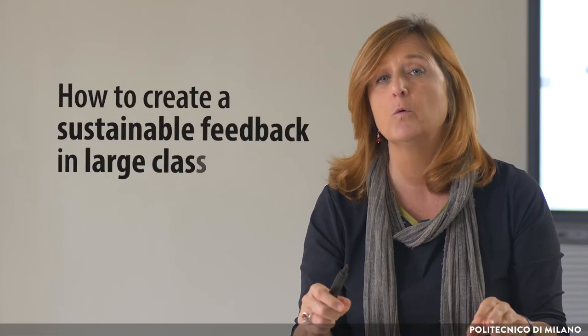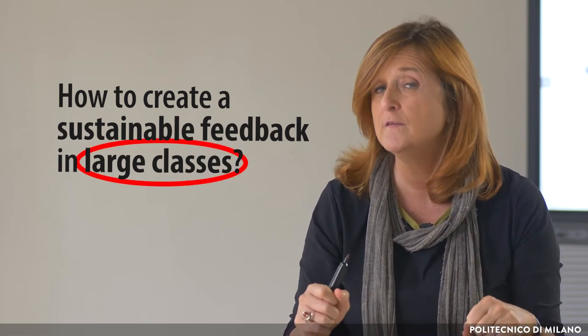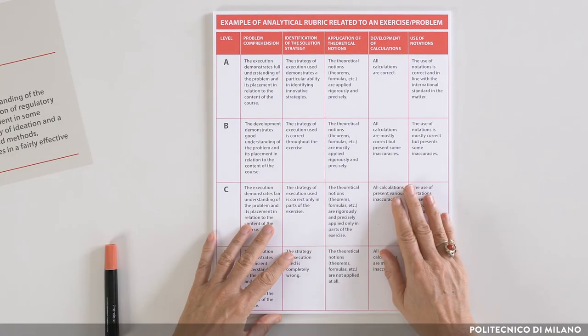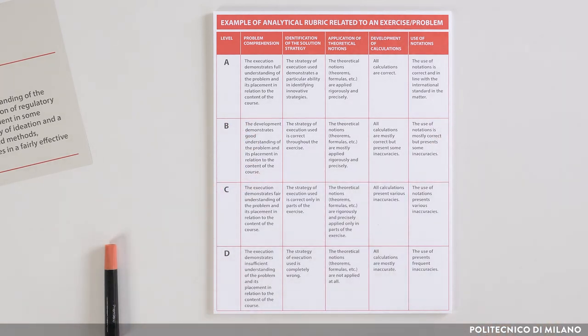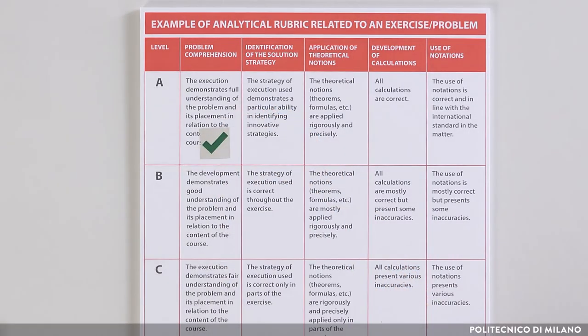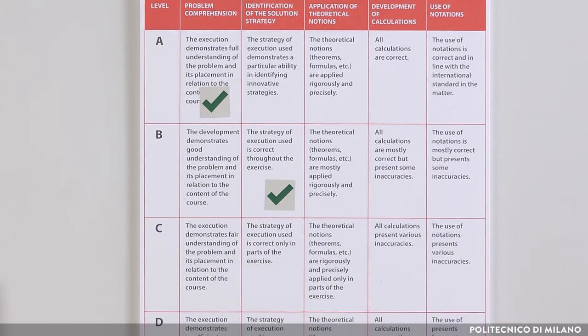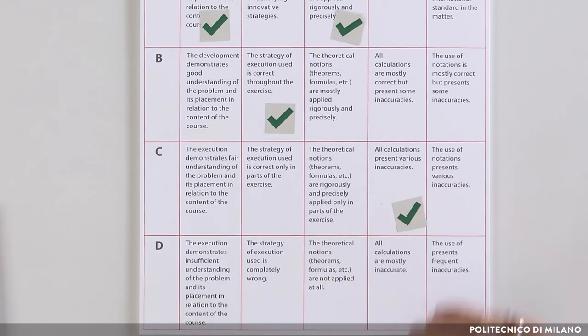Another important question, especially in large classes, is how to create a context where detailed, frequent and timely feedback is sustainable for the educator. If I have 120 students, how can I give them frequent feedback in a sustainable way? A useful tool that can make feedback more sustainable, even in large classes, is the grading rubric, which we have already talked about. When we create a system of criteria, indicators and different levels for each indicator, we can ease the evaluation process even with a high quantity of papers to review, providing feedback in a rich and articulated way with clear indications on students' strengths and weaknesses.